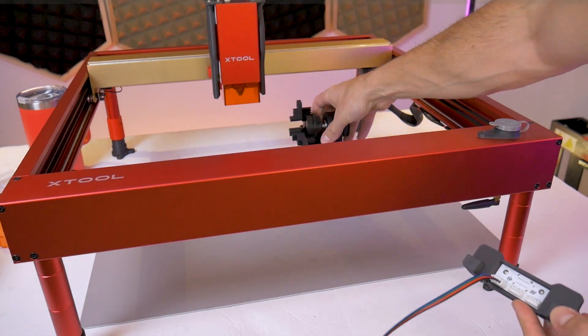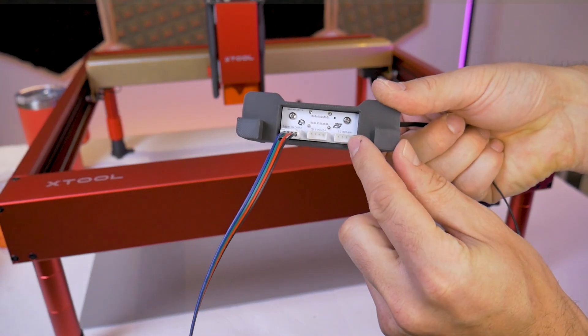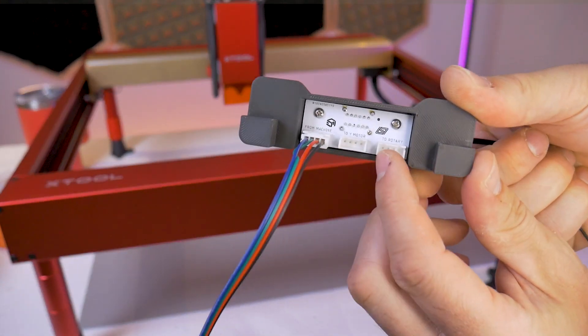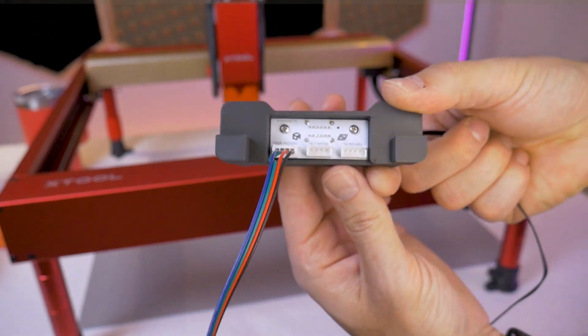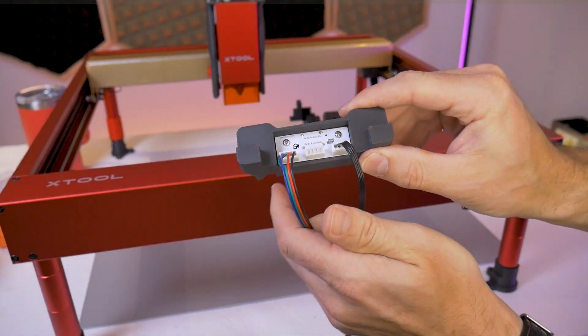Back over the machine we can grab the cable that comes with the RA2 and it has a four pin end and a six pin end. We'll take the four pin end connector and plug it into the connector on the rotary switch that reads 'to rotary.'